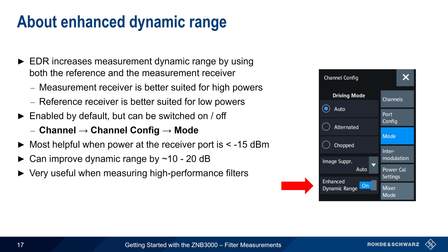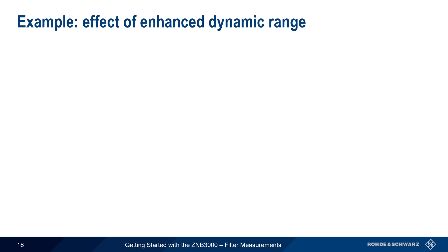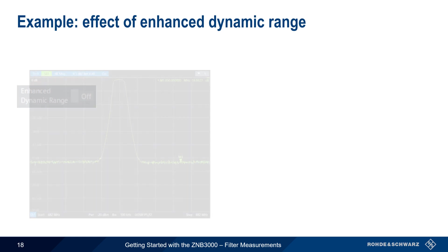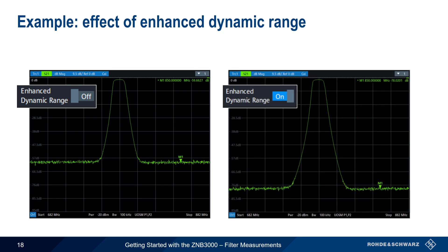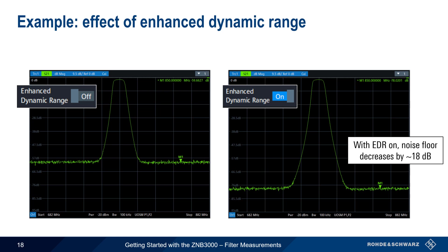EDR is very helpful when measuring high-performance filters — that is, filters with high levels of attenuation or rejection. Keep in mind that EDR can only be used when making transmission or S21 type measurements. In this example, if we disable EDR, we can only measure a stopband attenuation of approximately 60 dB. However, if EDR is enabled, dynamic range is increased, and in this case we can measure a stopband attenuation of approximately 78 dB — an improvement of almost 20 dB. Please keep in mind that EDR is on by default when making transmission measurements on the ZMB3000.